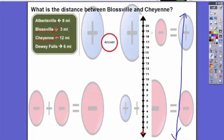I'm going to plot one, two, three for Blossville. My second town, Cheyenne, is twelve miles away, so I'm going to count up to twelve and plot it.